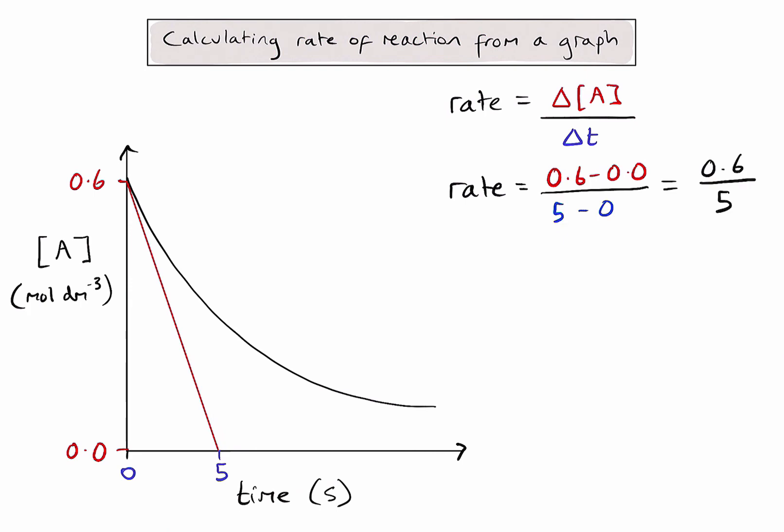So my rate of reaction at that point in the reaction, or time equals zero, is going to be 0.12 moles per decimetre cubed per second. And I could write those units on one line like this.